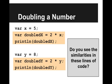Then below, I'm saying var y is 8, and then doubled y equals 2 times y, and I'll print that one out. The question here is, do you see the similarities in these lines of code?